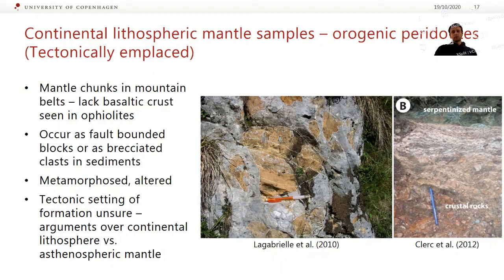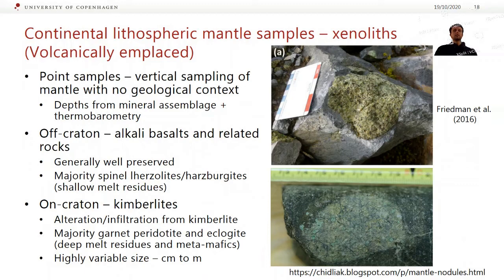These tend to be pretty metamorphosed and altered. As I mentioned, there's a bit of uncertainty about the tectonic setting. Another big source of information about the continental lithospheric mantle is from xenoliths — these are volcanically emplaced, essentially a little chunk of mantle that gets ripped up with some magma and ends up erupting in a lava. The problem with these is they're point samples — basically a vertical and maybe a bit random section of mantle that we've sampled, with no geological context whatsoever. You can figure out what depth they came from using thermobarometry, seeing at what pressure and temperature they equilibrated.